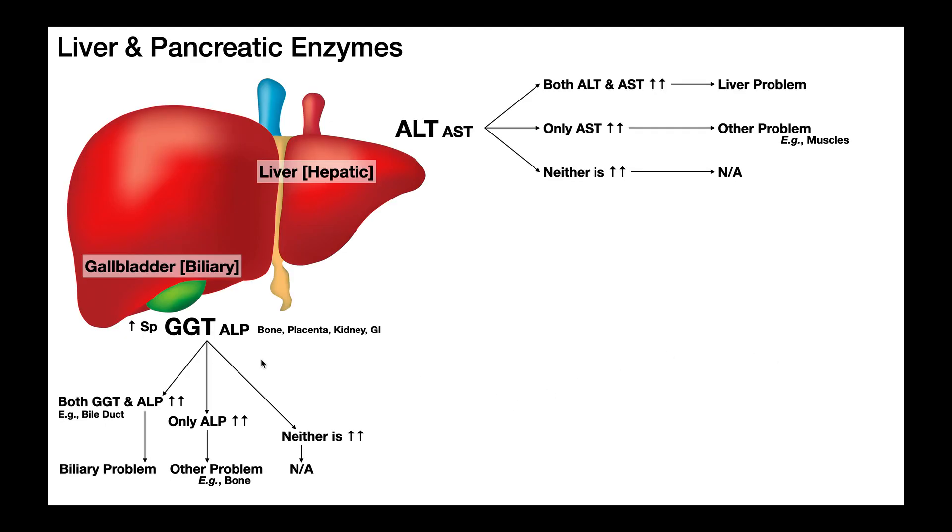Now, again, we have a very similar setup to what we had for the liver enzymes. We have one that's very specific to the biliary system. That's GGT. Okay, so GGT, gamma glutamyl transferase, is mainly found in the biliary system, in particular, the bile ducts and the gallbladder. Whereas ALP, this is found in the biliary system, but it's also found in bone, in placenta, in the kidneys, in the GI tract. Okay, so this one is not as specific. So now we can say, what happens if both of these enzymes are elevated? Well, if both GGT and ALP are elevated, then it's going to indicate a biliary problem, especially because of that GGT. Remember, that's very specific to the biliary system. So if you have both of these enzymes elevated in the blood, it's a biliary problem, and you might start to suspect the bile duct having a problem.